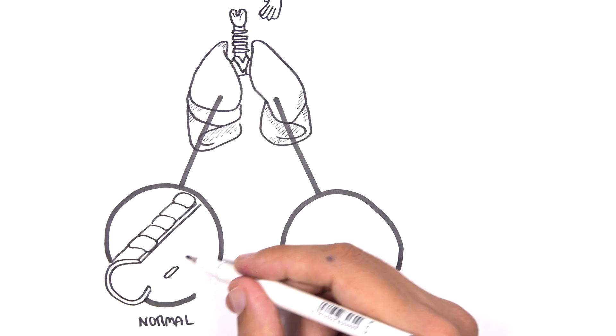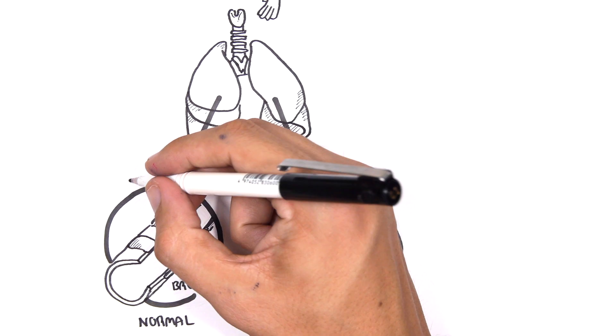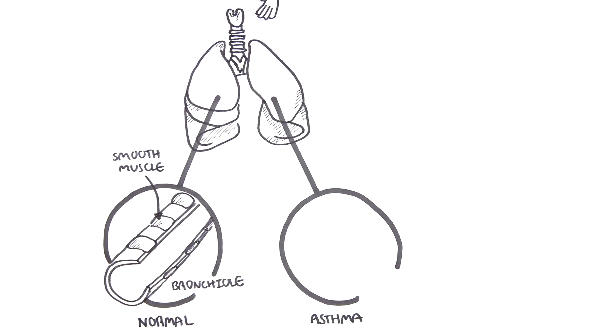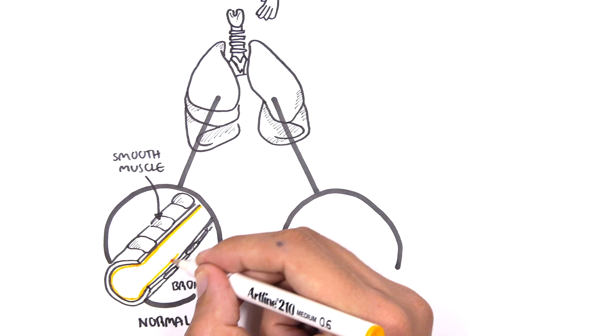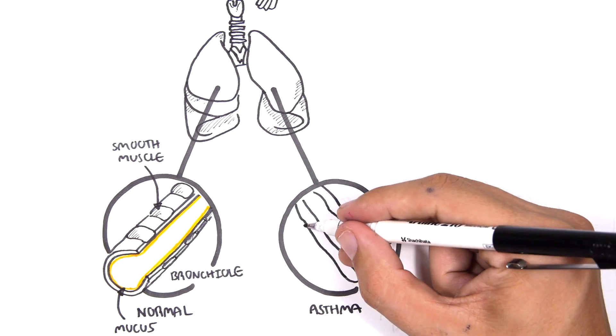The normal bronchioles have smooth muscles which help in narrowing and dilating the lower respiratory tract. The respiratory tract is also covered with mucus which helps in protecting the airways.